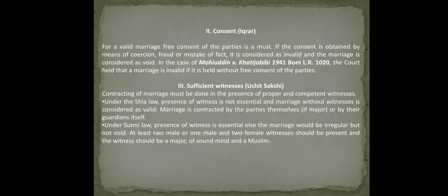At least two male or one male and two female witnesses should be present under Sunni law. Under Shia law, however, the presence of witnesses is not essential — a marriage contracted by the parties themselves or by their guardians is considered valid even without witnesses. If both parties are major, they can contract marriage themselves without witnesses. If they are minors, their guardian can contract marriage on their behalf with consent.